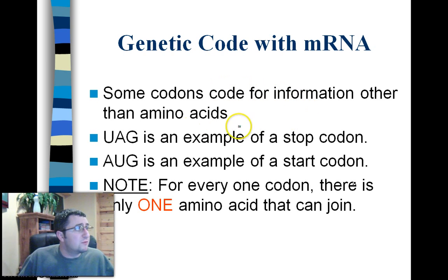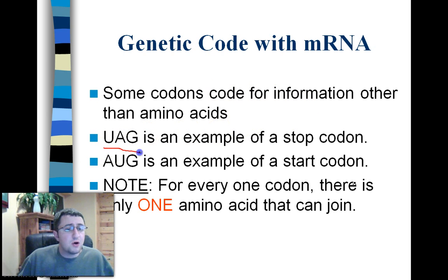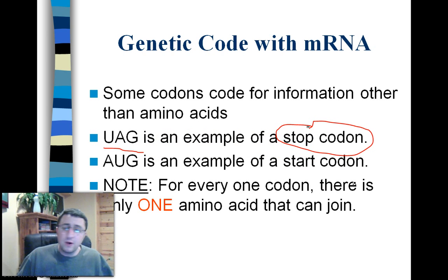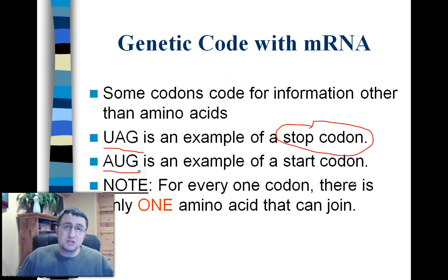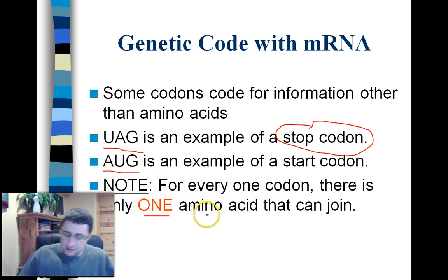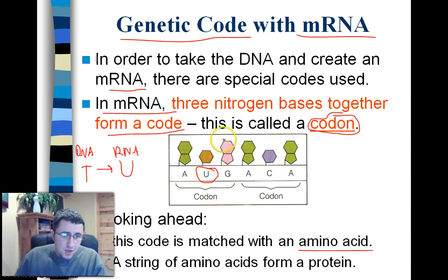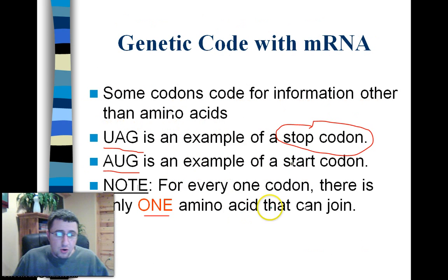Some codons code for information other than amino acids. For example, if we have a codon that is UAG, it means to stop making that protein — whatever sequence of amino acids we have, end them right there. UAG is a stop codon, and AUG is a start codon, meaning let's start making a protein now. For every one codon, there is one amino acid. This codon found on RNA codes for one specific type of amino acid.